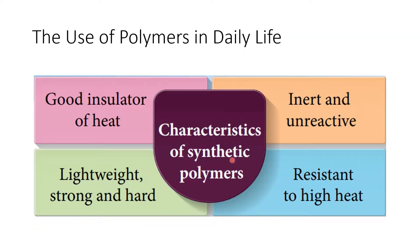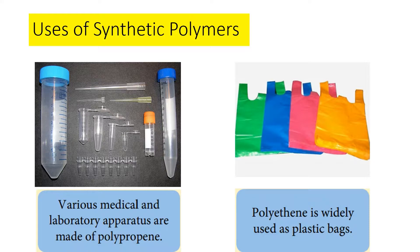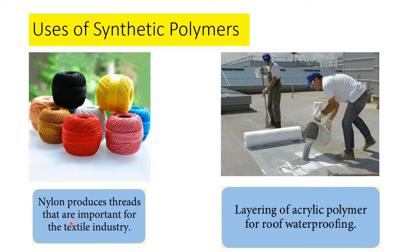Now, the uses of polymers in daily life. Synthetic polymers have good properties: they are good insulators of heat, inert and unreactive towards most chemicals, resistant to high heat, lightweight, strong, and hard. Various medical and laboratory apparatus are made from polypropene — for example, vials for blood or urine samples. Polyethene is widely used for plastic bags. Nylon produces threads important for the textile industry, and acrylic polymers are used for roof waterproofing.